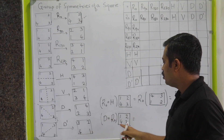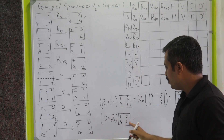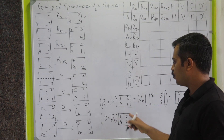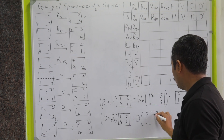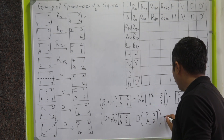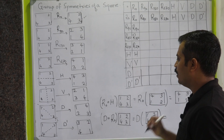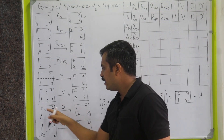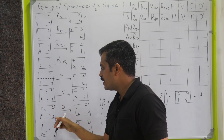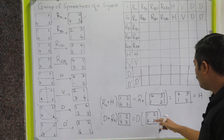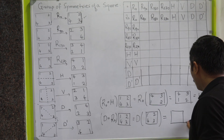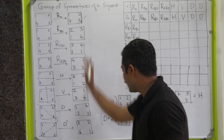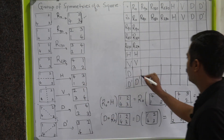To calculate D ∘ R0: first we operate R0 on the square, which keeps it as 1, 2, 3, 4. Then we operate D on that square. The diagonal flip D keeps 1 and 3 fixed and interchanges 2 and 4, giving us 1, 3, 2, 4 — wait, specifically 1, 4, 3, 2 in position order. Comparing to our symmetry list, this corresponds to D. Therefore, D ∘ R0 = D.